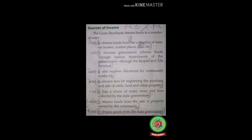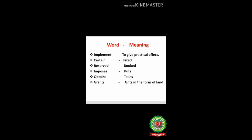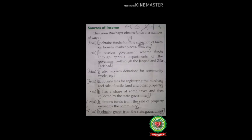Number five: it has a share of some taxes and fees collected by the state government. Number six: it obtains funds from the sale of property owned by the community. Number seven: it obtains grants from the state government — 'grants' means gifts in the form of land. These are the sources of income of the gram panchayat, through which the panchayat can implement their plans for the welfare of the village.